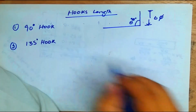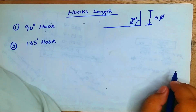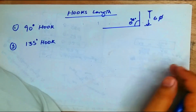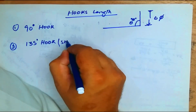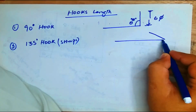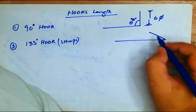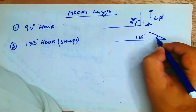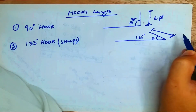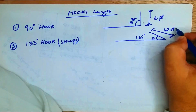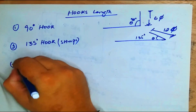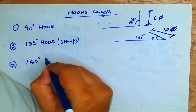The second type is the 135-degree hook. The 135-degree hook is normally used in stirrups. For this type of hook, the extra length commonly used is 12 times the diameter of the bar (12d).